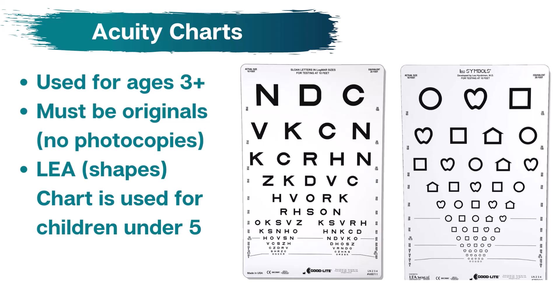Each screener should have both the Sloan Letter Chart and LEA Symbols Chart available during the screening. The letter charts are used for children who know all of their letters, usually age 5 or older. For children under the age of 5, you may use the LEA Chart. Be sure to prepare the child and determine their comfort with the alphabet when deciding which chart to use.